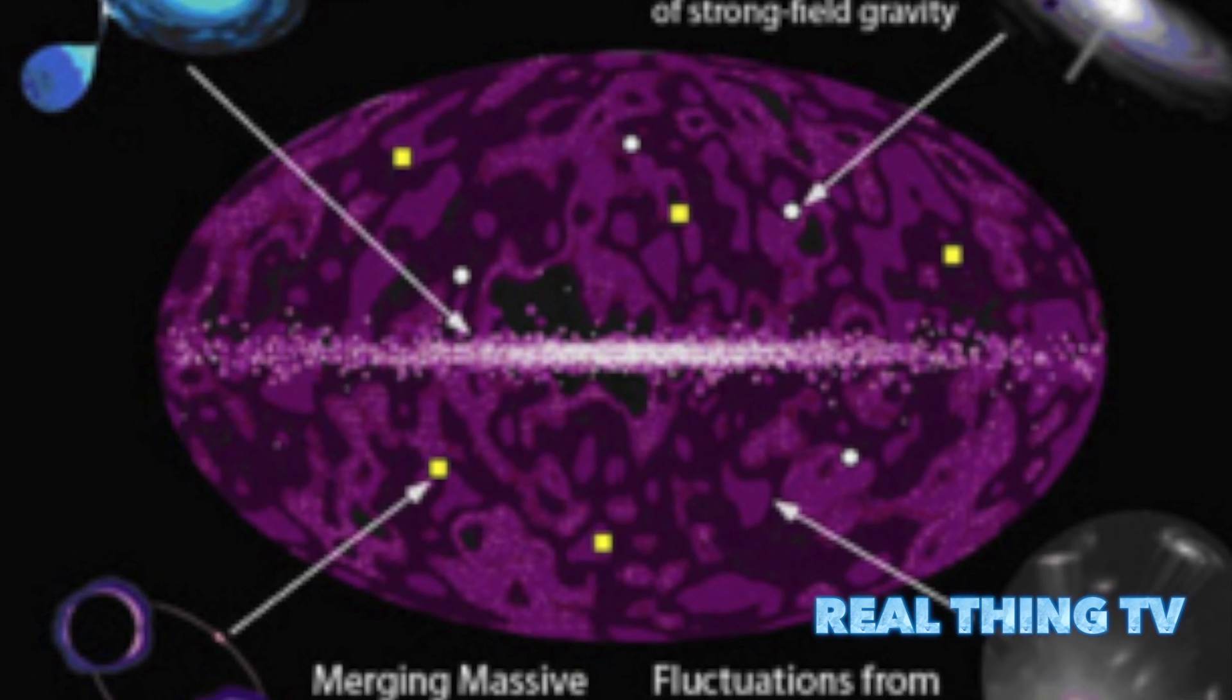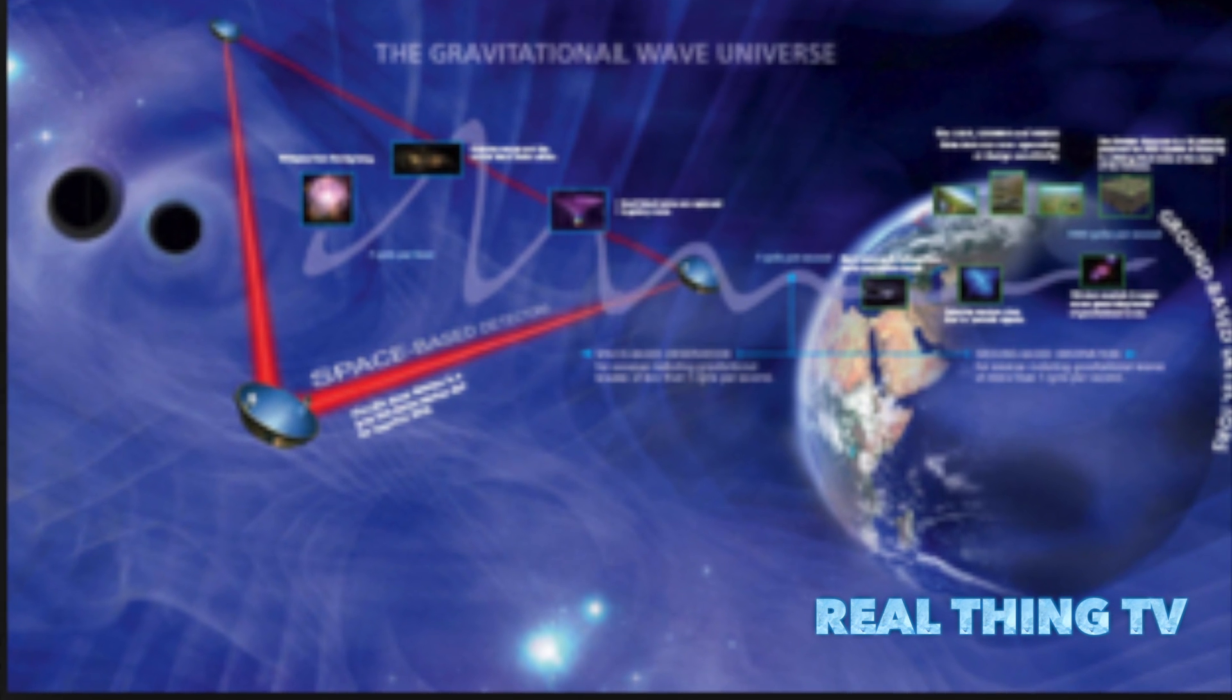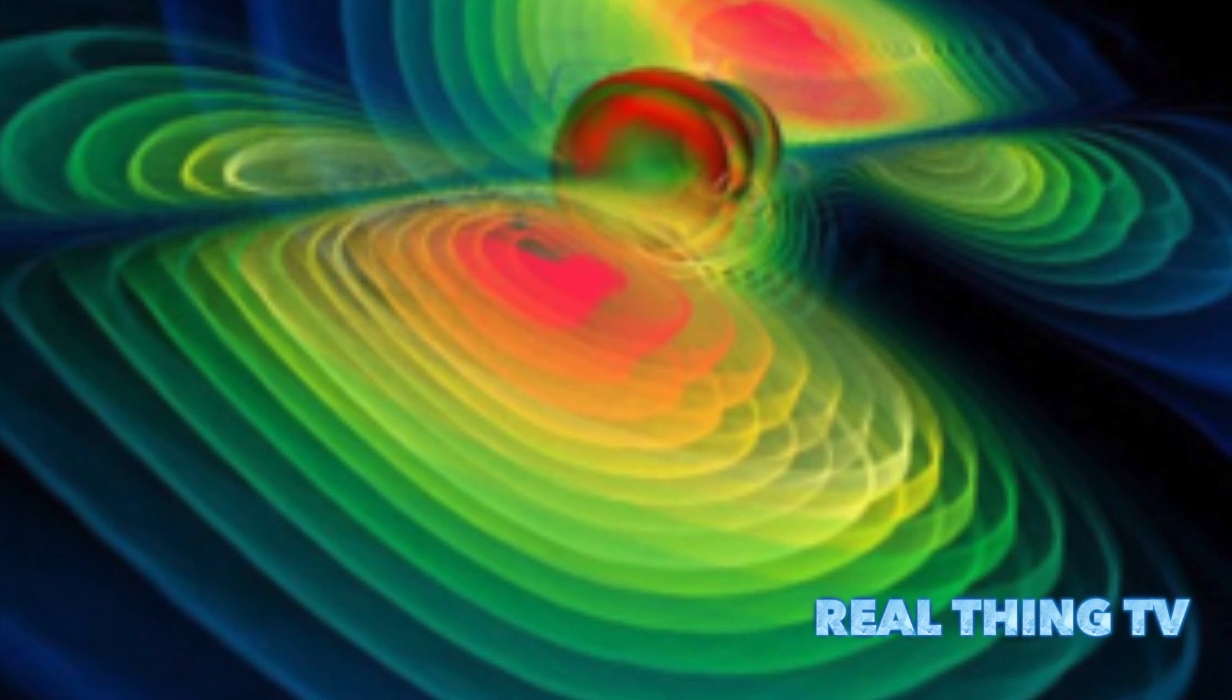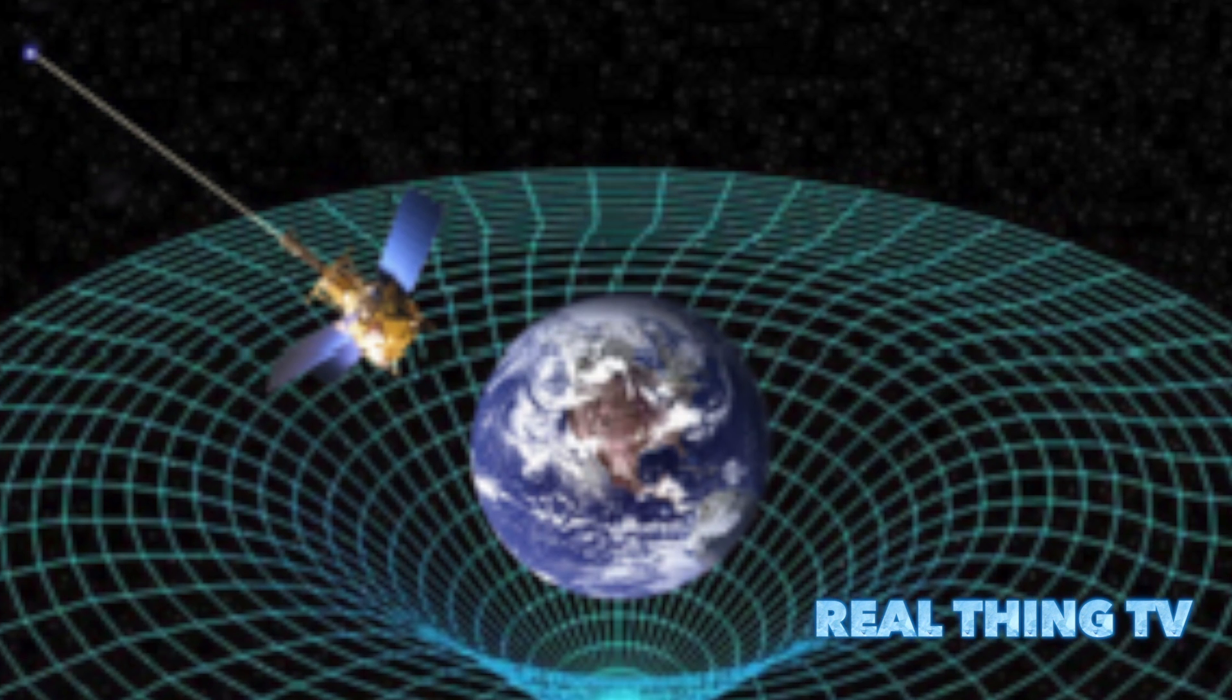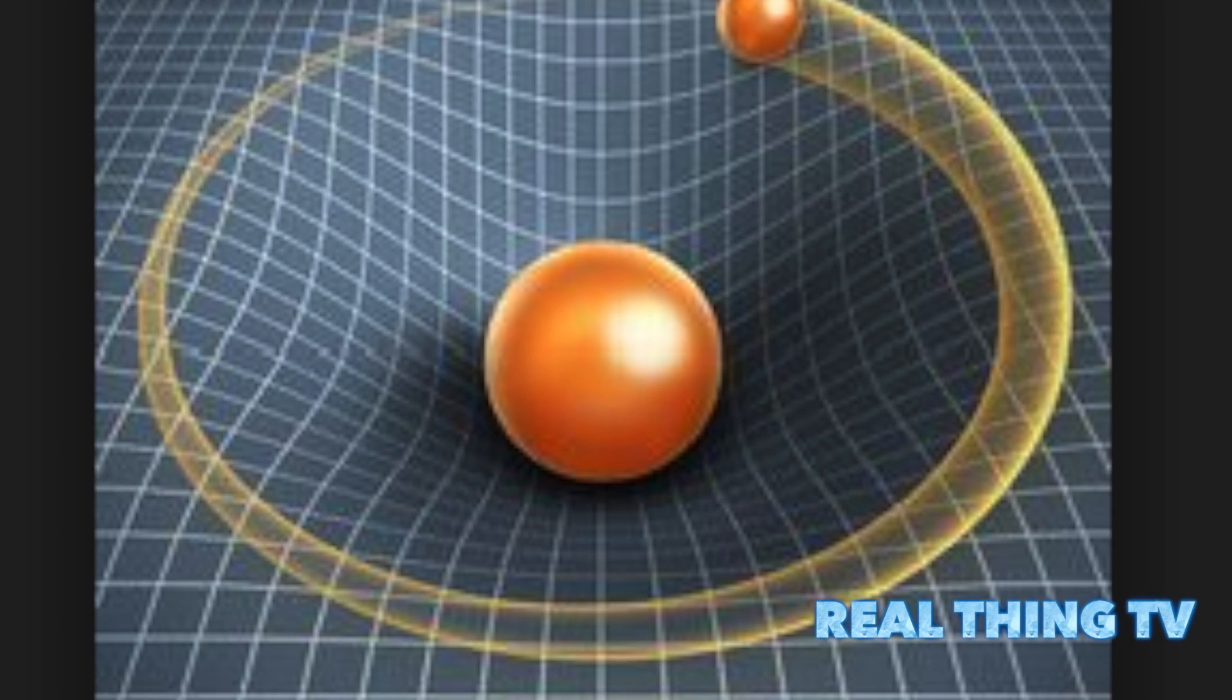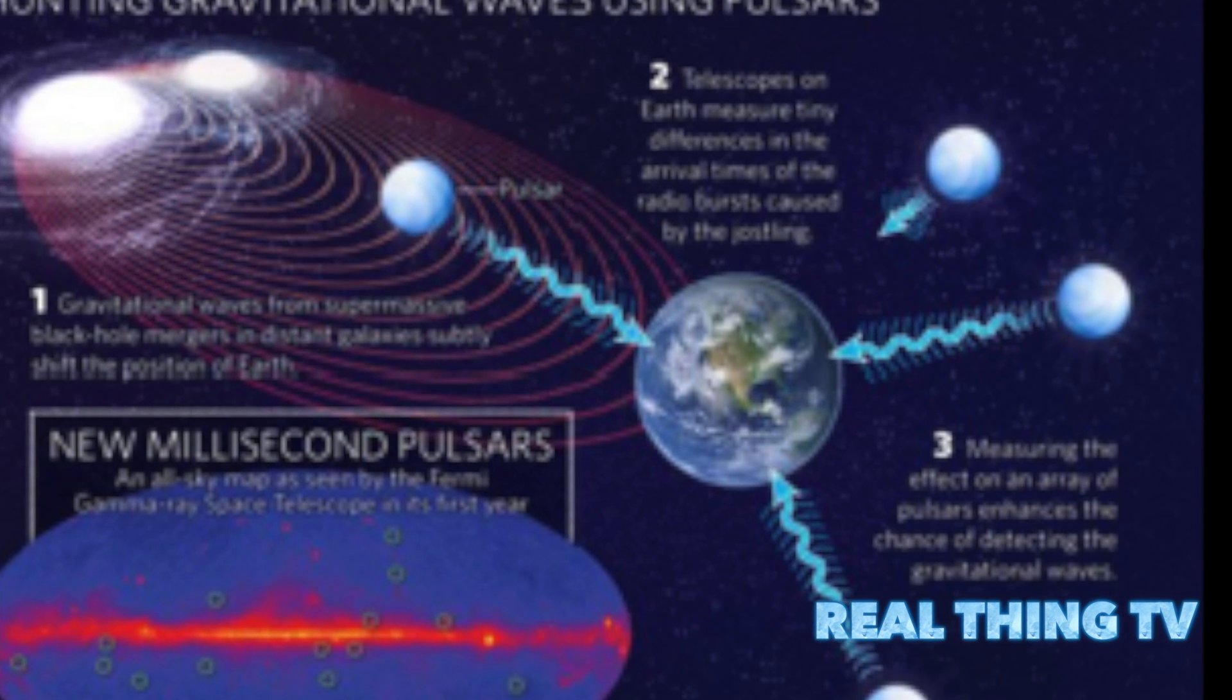Such as a supernova or when black holes merge, the stronger and more forceful an explosion is, the more powerful the gravitational waves it will emit. Much like a rubber dinghy boat floating on water, the waves can pull objects back and forth as they travel at the speed of light through space.